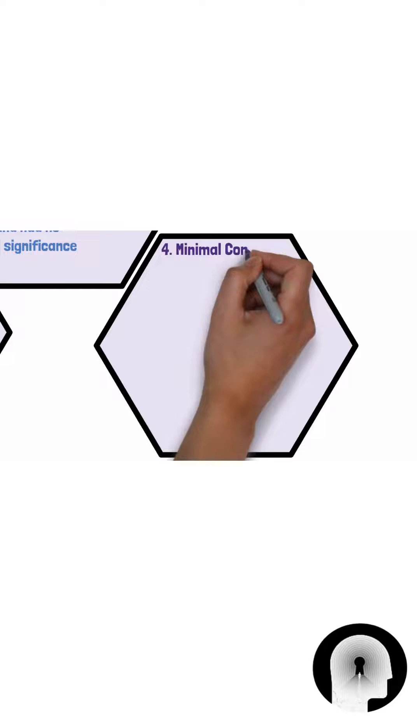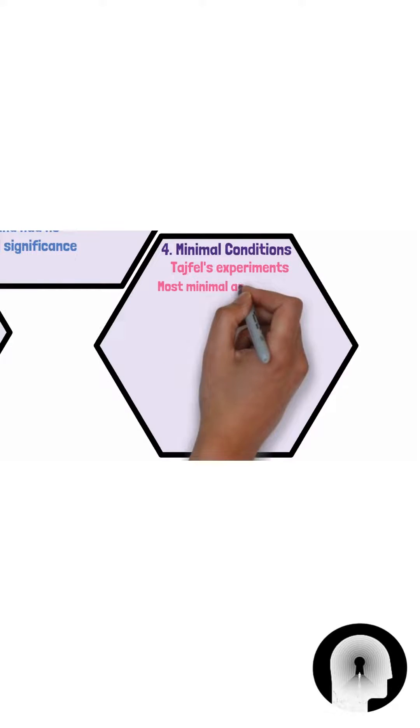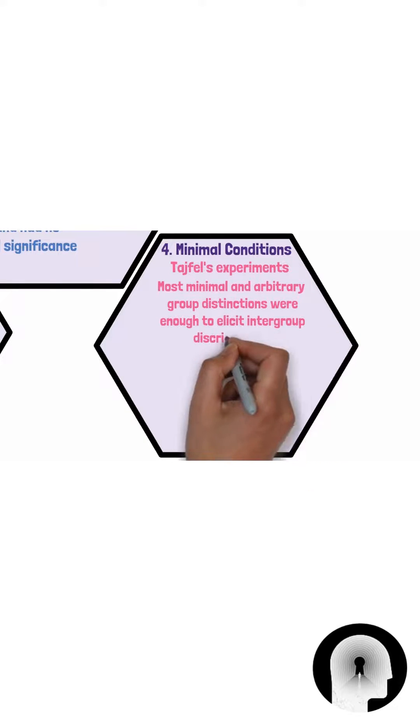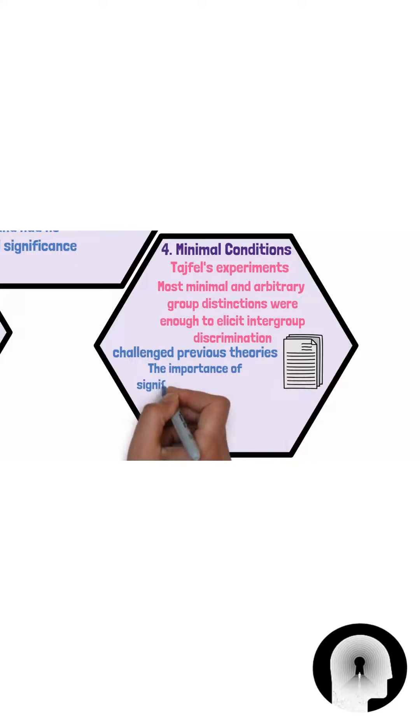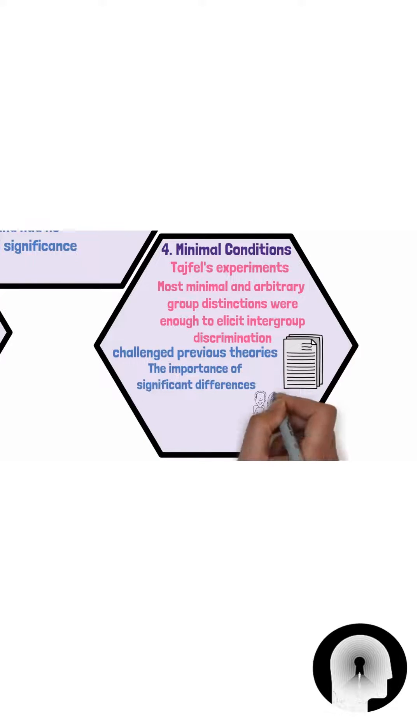Fourthly, minimal conditions. Tajfel's experiments demonstrated that even the most minimal and arbitrary group distinctions were enough to elicit inter-group discrimination. This finding challenged previous theories that emphasized the importance of significant differences between groups for inter-group bias to occur.